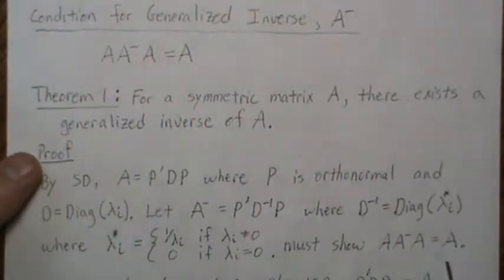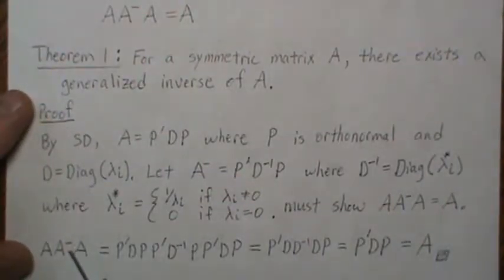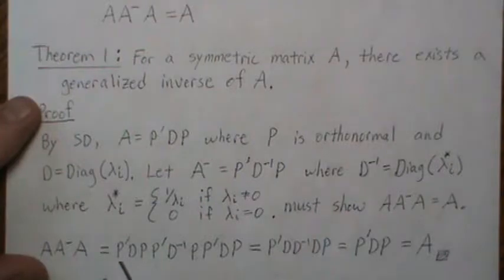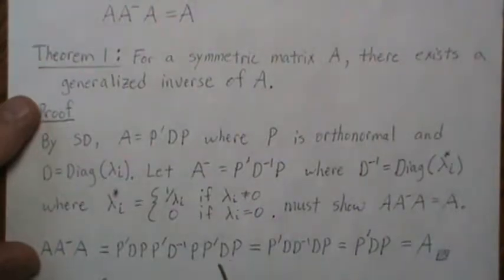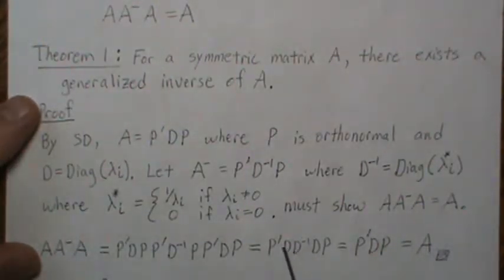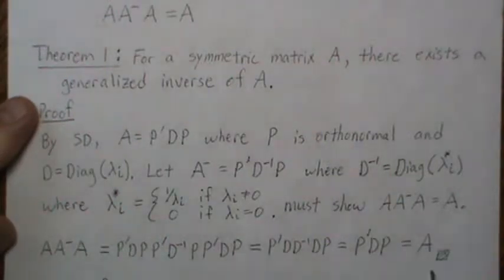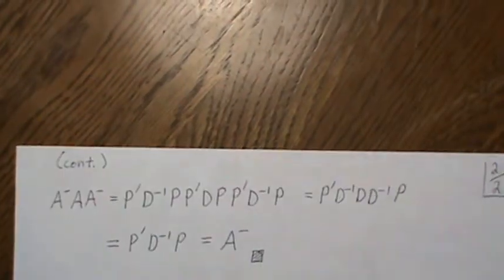We must show that the condition A A-dash A = A holds. Using the spectral decomposition, A A-dash A expands to (P'DP)(P' D-inverse P)(P'DP). Since P is orthonormal, P P' equals the identity matrix, and D D-inverse equals the identity matrix, so we're left with P'DP, which is A. This satisfies the property for a generalized inverse, so one exists for every symmetric matrix A.